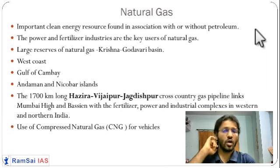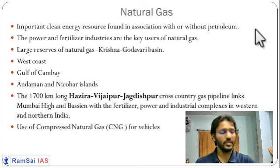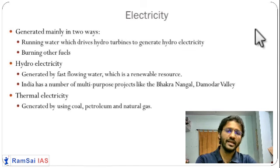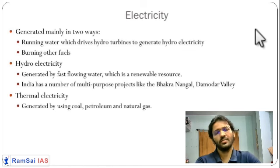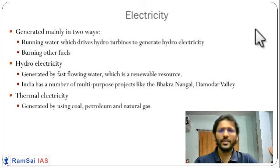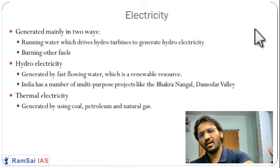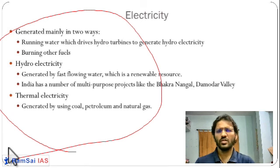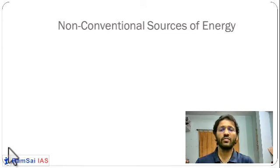Electricity is generated using non-metallic minerals — coal, oil, and natural gas — as well as water. Depending on the source, electricity production is divided into thermal (from coal/gas/oil) and hydraulic (from water). These are the important conventional energy resources.